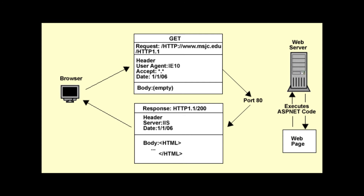Every HTTP message has the same format, whether it's a client request or a server response. You should think of all the information associated with the client request or server response as a packet. This packet can be broken down into three sections: the request-response line, the HTTP header, and the HTTP body.